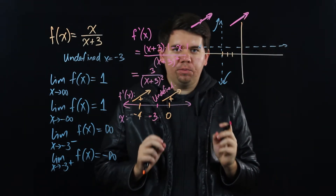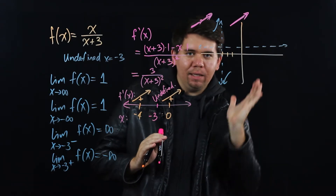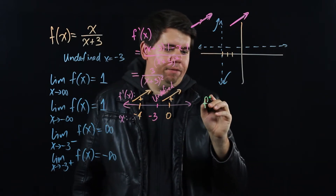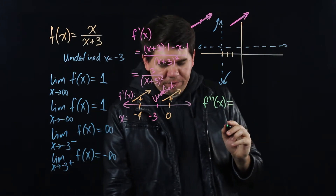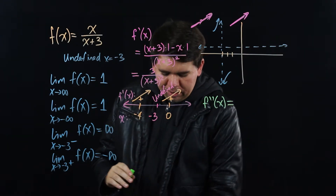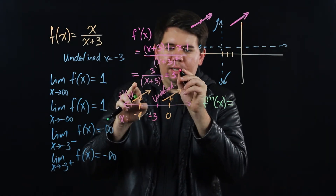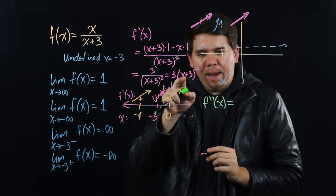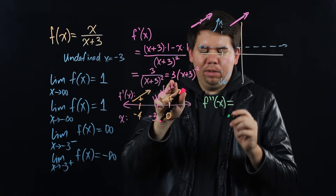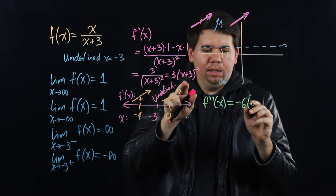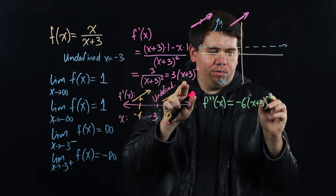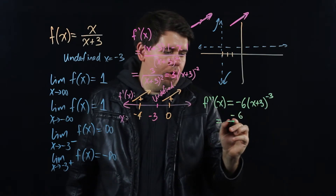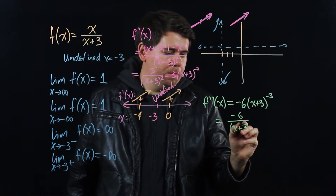The last piece of information we need is about concavity — how the graph bends up or down. We calculate the second derivative. We can write the first derivative as 3 times (x+3)^(-2), and use the power rule: the -2 comes down to give minus 6 times (x+3)^(-3), which equals minus 6 over (x+3)³.